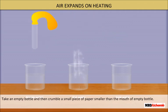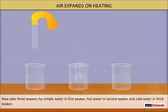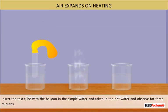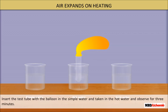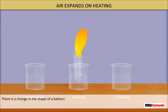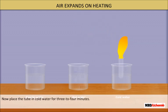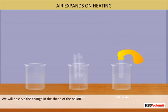Take a test tube and stretch a balloon tightly over the neck of the tube with the help of tape. Now take three beakers: pour simple water in the first beaker, hot water in the second beaker, and cold water in the third beaker. Insert the test tube with the balloon in the simple water and then in the hot water and observe for three minutes. There is a change in the shape of the balloon. Now take the tube out, cool it at room temperature, then place it in cold water for three to four minutes. We will observe the change in the shape of the balloon.